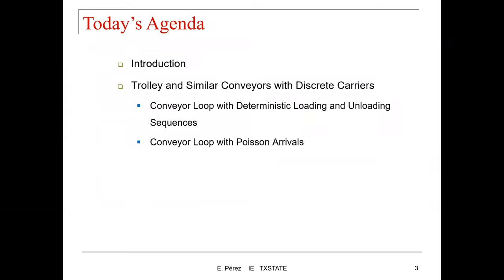This lecture is a continuation of the previous video lecture in which we considered a conveyor loop with deterministic loading and unloading sequences. What deterministic loading and unloading means is that in this type of problem, we assume from the beginning that we know the number of units that are going to be loaded and unloaded and their sequences. For the second part, which is this video lecture, we focus on conveyor loop with Poisson arrivals, adding uncertainty into the loading and unloading sequences for conveyors with discrete carriers.